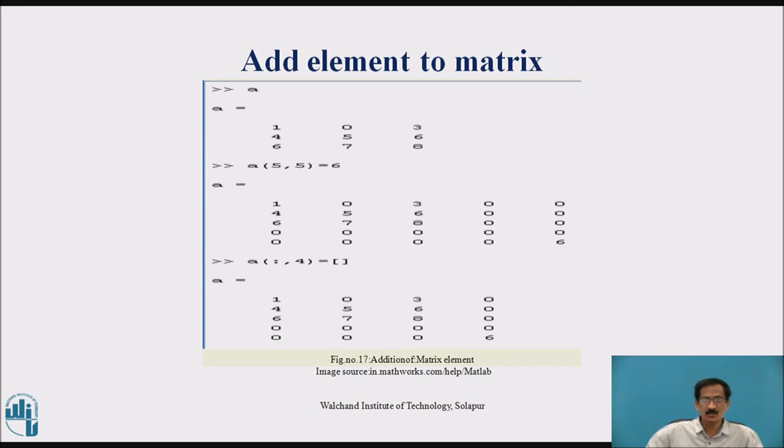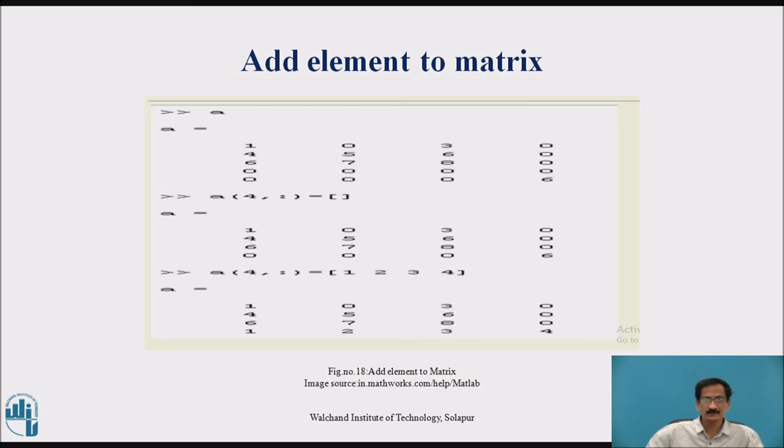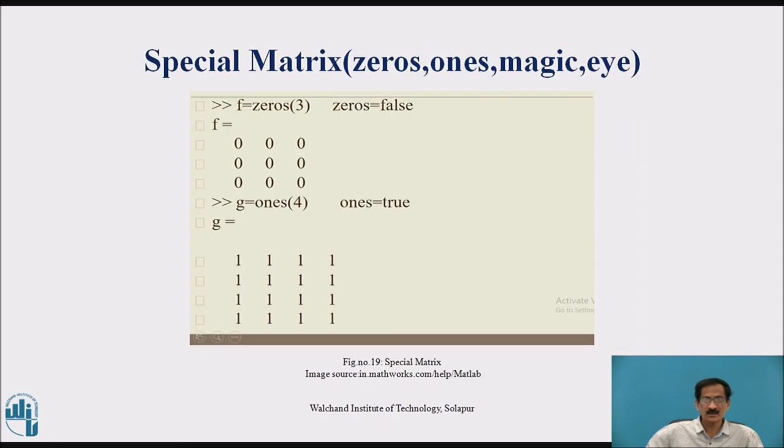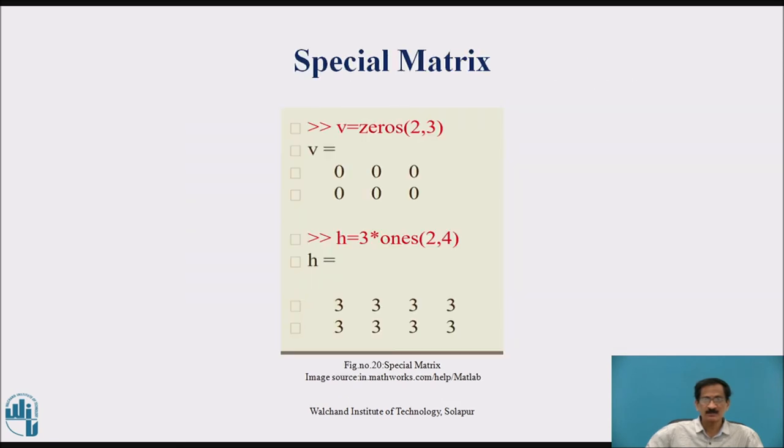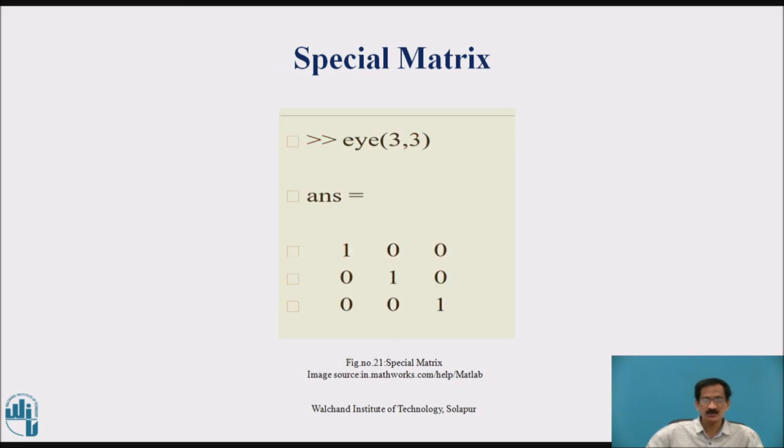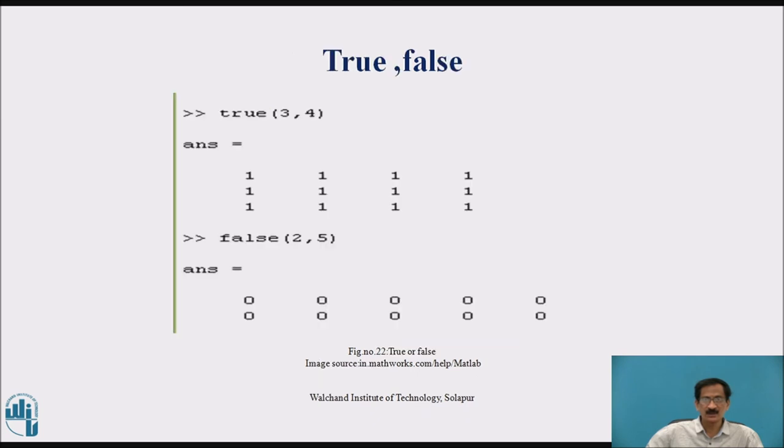Then we can remove the elements by typing a 1 4 is equal to empty. We can add the elements. This special matrix V is 0, 2, 3 will put all the elements as 0, 2 rows and 3 columns matrix. H 3 star 1. This is the special matrix true or false.